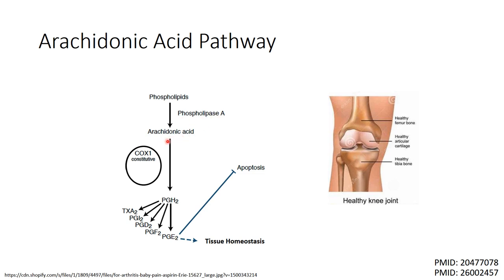Arachidonic acid can be subsequently converted into prostaglandin H2 by an enzyme known as cyclooxygenase 1. Cyclooxygenase 1 is expressed constitutively in various cells and tissues including those of the synovial lining layer. This enzyme plays an important role in maintaining tissue homeostasis through the production of cytoprotective prostaglandins.